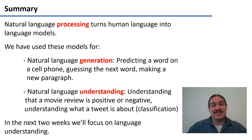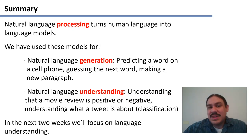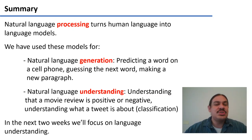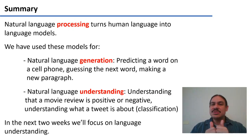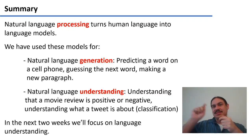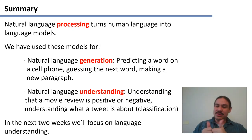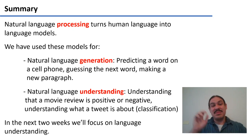We've used language models for two things. One of them is natural language generation — for example, predicting a word on your cell phone once you've typed a few letters, or guessing the next word when you're typing on your phone and predicting what's going to come next.